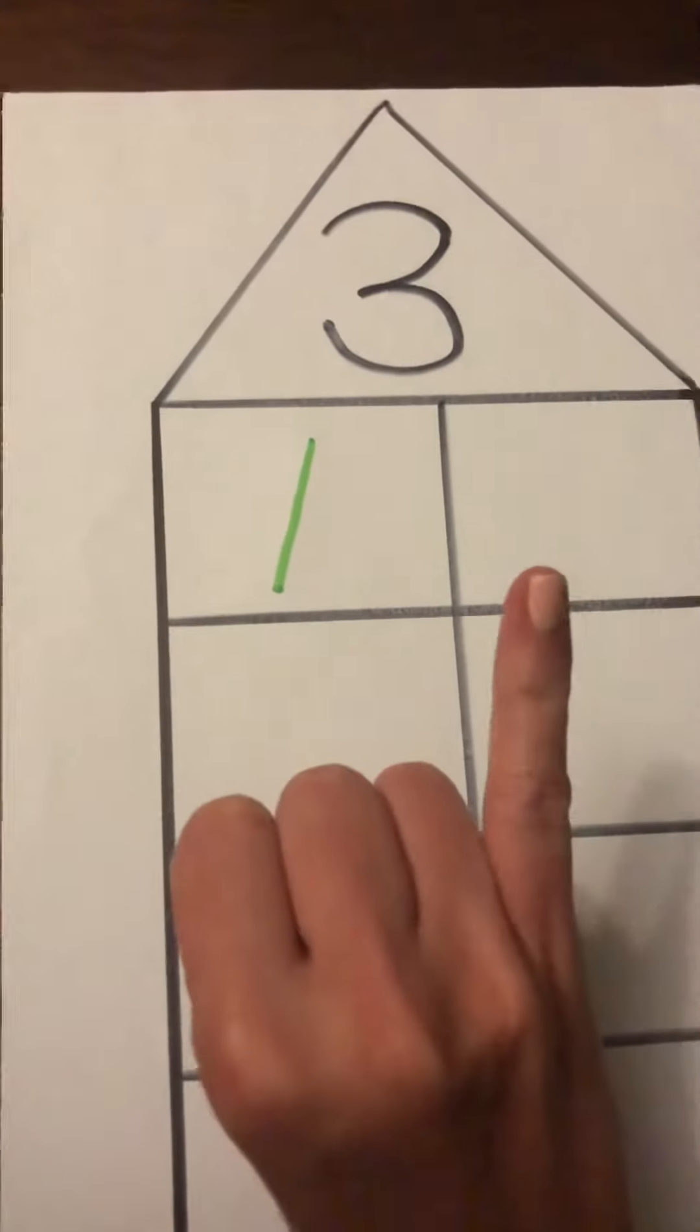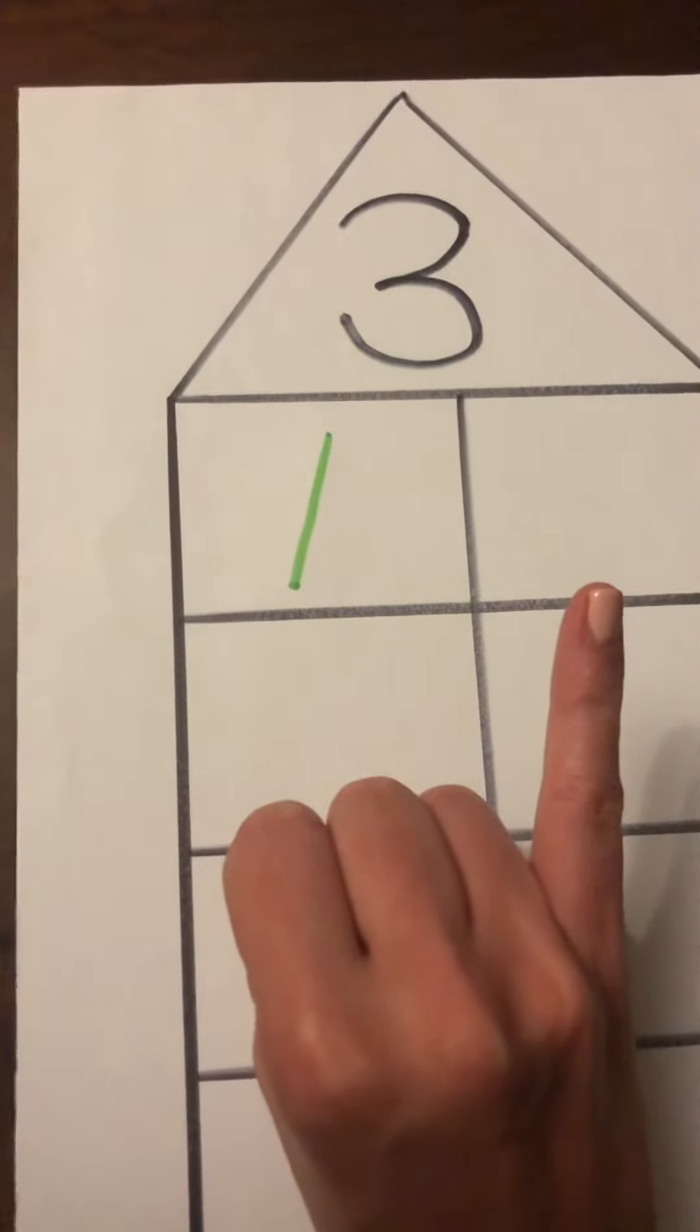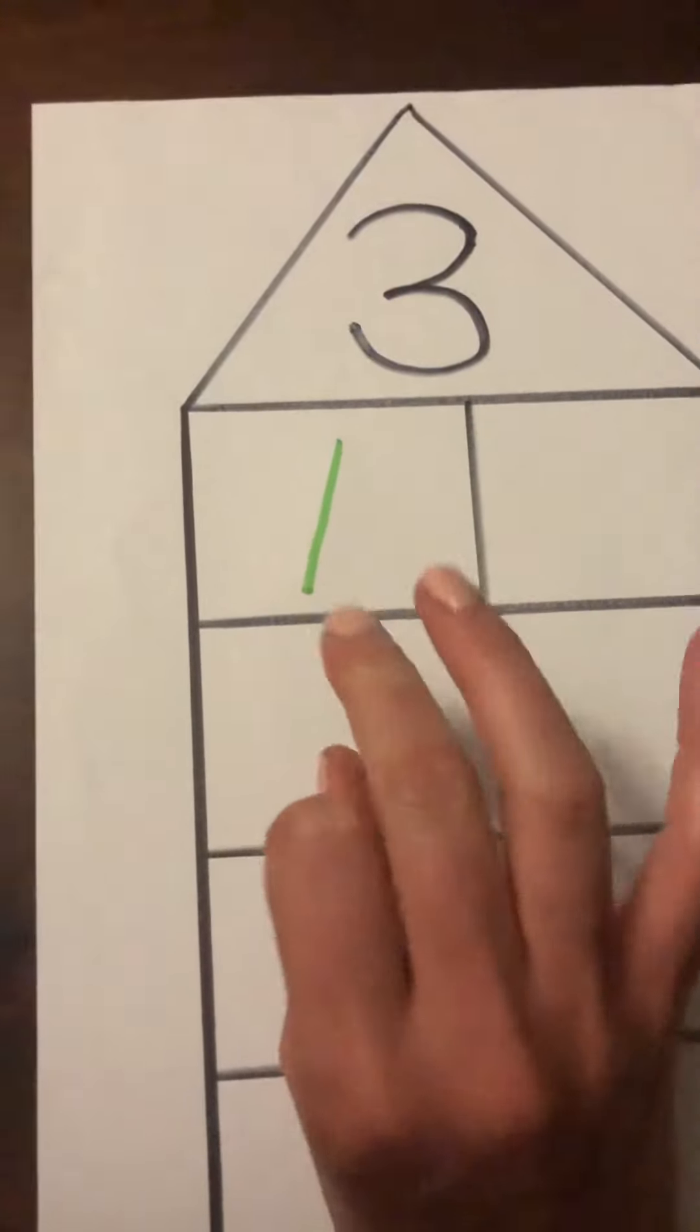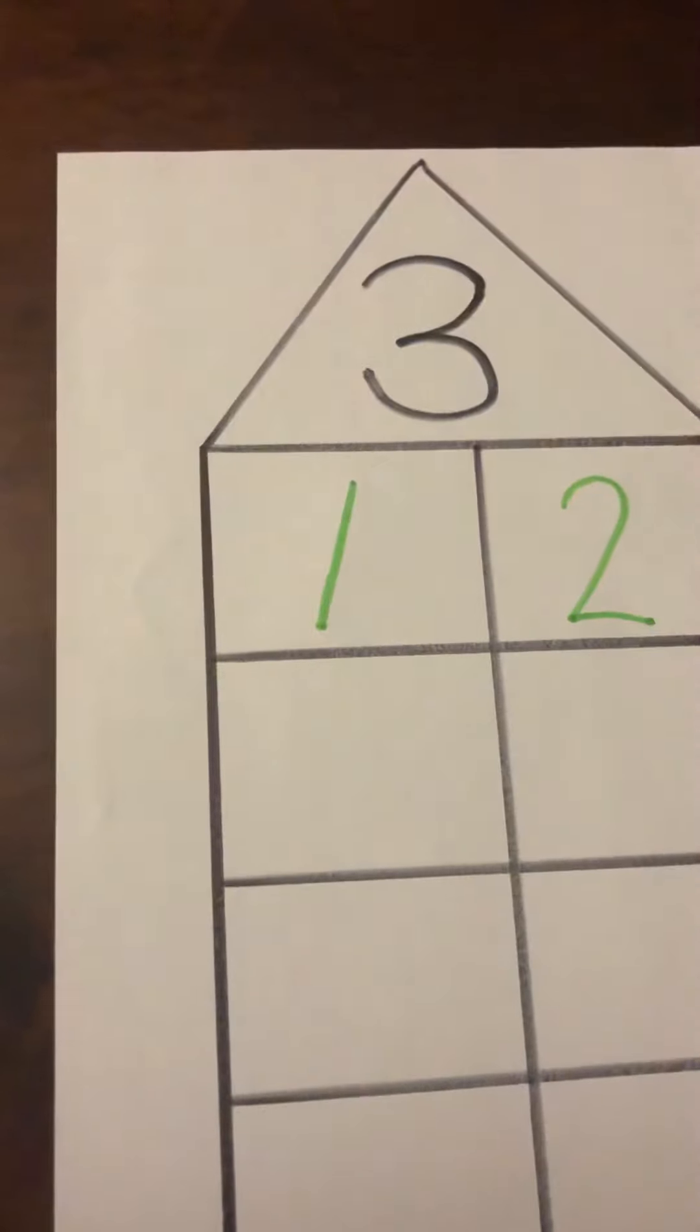Let's use our fingers to make it easier. I already have one. How many must I add to get to three? Let's count. One, two. So one plus two will be three. So on that floor is three people.